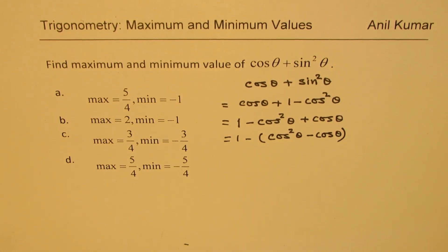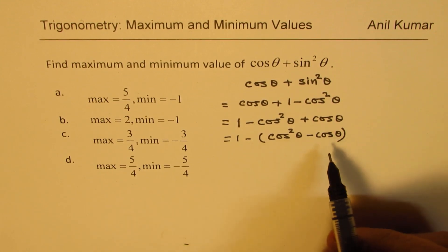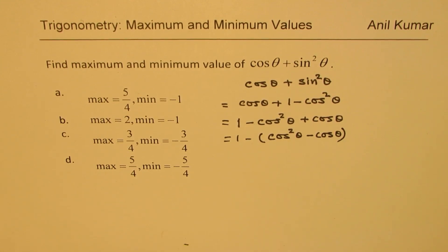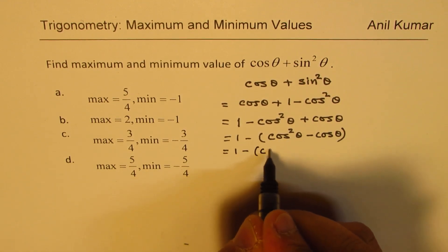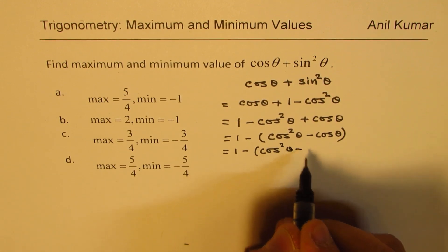To find maximum and minimum we'll actually follow the principles of quadratic equations. So let's try to make it a perfect square. How can I make it a perfect square?